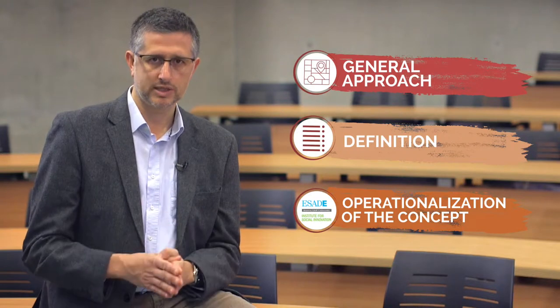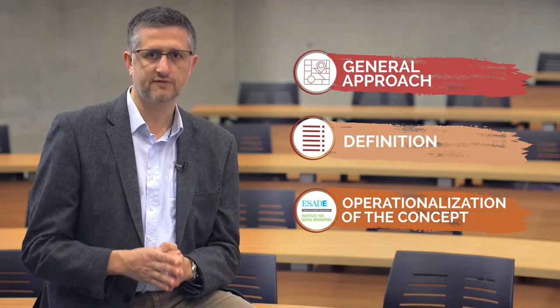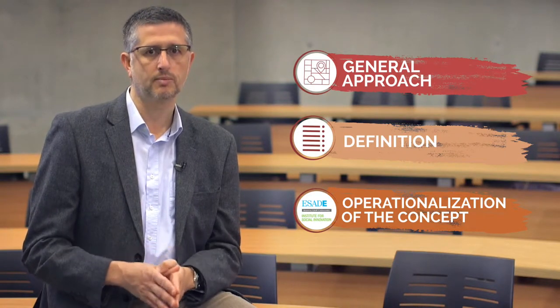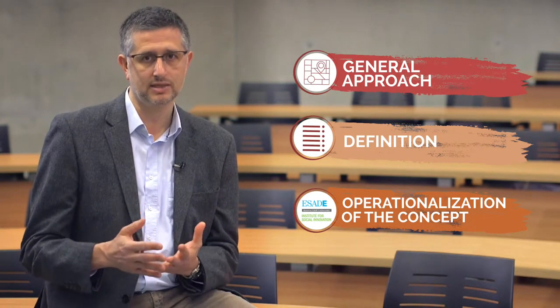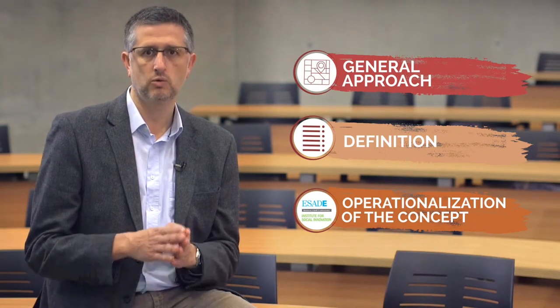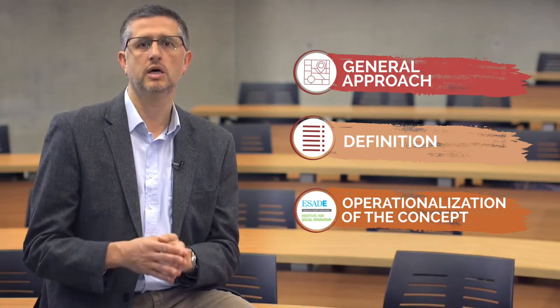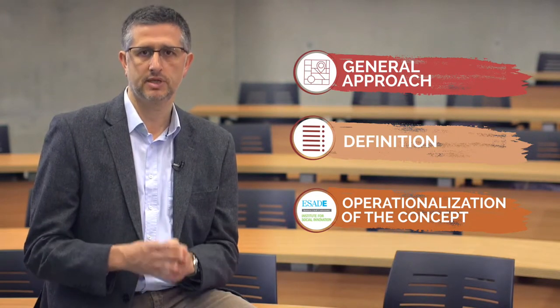We operationalize the concept based on five key variables which, from our perspective at the Institute for Social Innovation, give sense and purpose to social innovation as such. As you will see, the use of these five variables will provide a general framework to understand social innovation when working on sustainable business models.